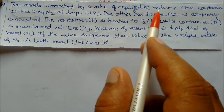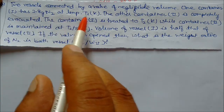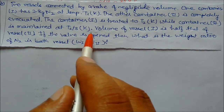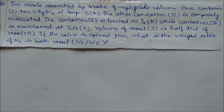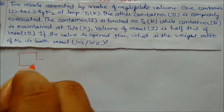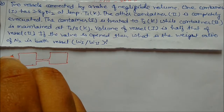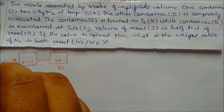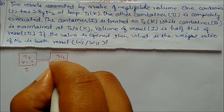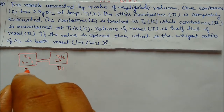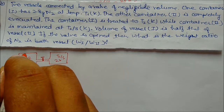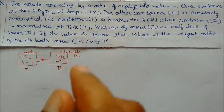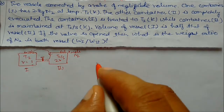Next problem: two vessels connected by a valve of negligible volume. Container one has 2.8 grams of nitrogen; the other is evacuated. Container one is heated to temperature T₂ while container two is maintained at T₂/3 Kelvin. Volume of vessel one is half that of vessel two, i.e., V and 2V. Initially 0.1 moles of nitrogen is in vessel one; x moles transfer to vessel two upon heating.